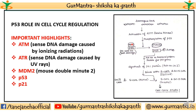If there is no damage, p53 remains bound to MDM2. But if damage occurs, the ATM pathway activates for double-strand breaks and ATR activates for single-strand damage. Phosphorylation is added to p53, which separates it from MDM2. p53 then transcribes and regulates a gene called p21. p21 is a CDK inhibitor and causes the cell cycle to arrest in this scenario, stopping the cell.